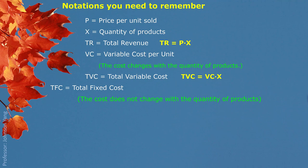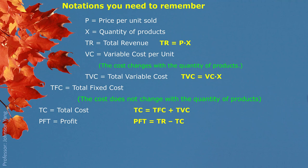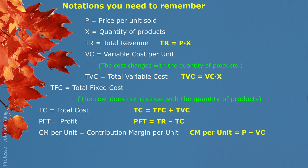TFC represents total fixed cost. Total cost comes from two parts: total fixed cost and total variable cost. PFT represents profit, so profit is the difference between total revenue and total cost. Cm per unit is contribution margin per unit, which tells us how much from selling each product can be contributed to cover the fixed cost. Contribution margin per unit comes from the difference of price and variable cost per unit.